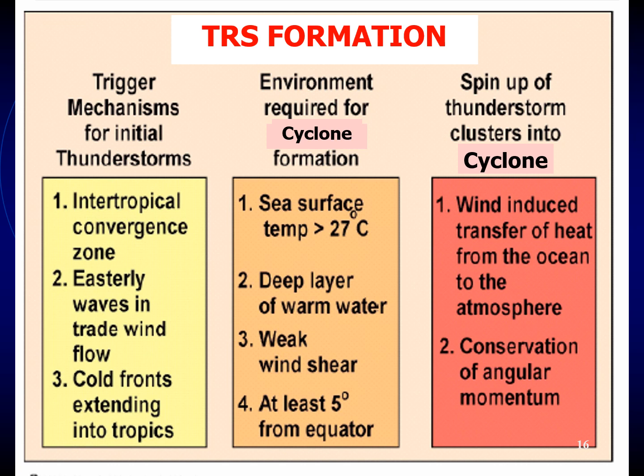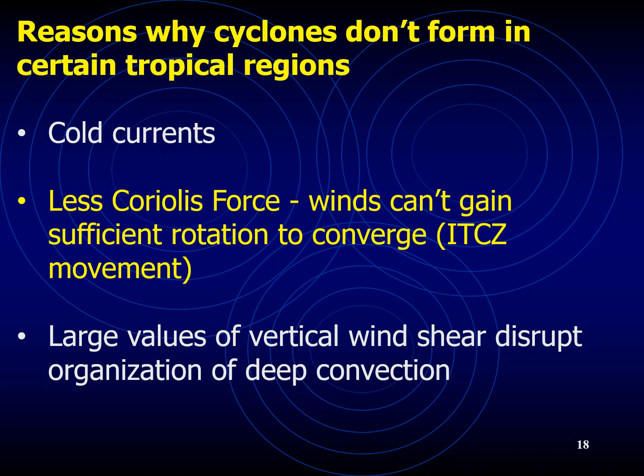Now you would know why tropical storms form only in specific areas — because those are the only areas where the six conditions of tropical cyclone formation are fulfilled. Tropical revolving storms do not form in the South Atlantic because the intertropical front seldom moves sufficiently south of the equator. They also don't form in certain tropical regions due to cold currents or cold water.